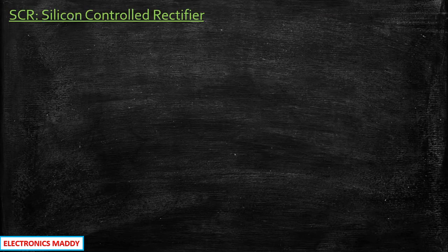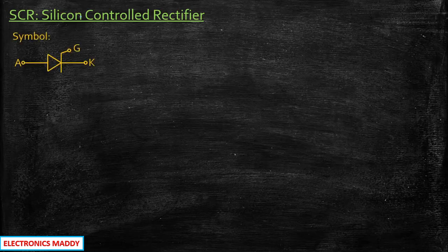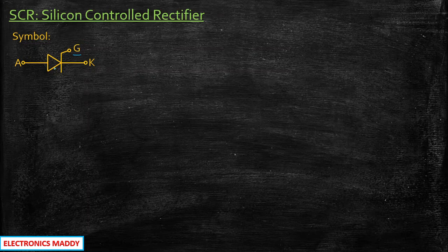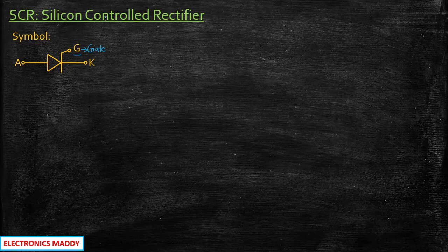SCR stands for silicon controlled rectifier. Silicon is the material used while manufacturing this device. The word 'controlled' is used for a specific purpose — if you carefully look at the symbol of an SCR, it has three terminals: anode, cathode, and gate. Compared to a normal diode, the gate is the additional terminal, and it is used for controlling this device. That is why the word 'controlled' is in the abbreviation of SCR.